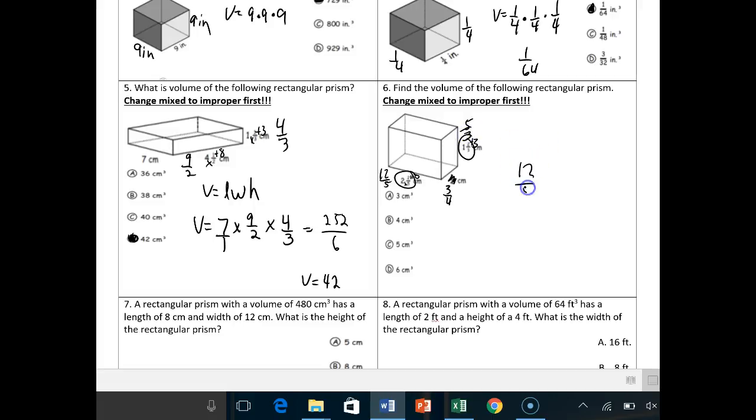Volume equals length times width times height. So volume equals 12 over 5 times three-fourths times five over three. You could cross-cancel if you want. These guys cancel out to one. The 12 and the four cross-cancel. This guy turns to a three, this guy turns to a four. Let me try this again.